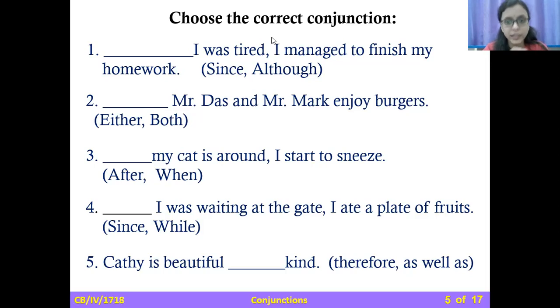Fourth. I was waiting at the gate. I ate a plate of fruits. So two actions. I told you now. Two actions are happening at the same time. So which word will you use? While. While I was waiting at the gate, I ate a plate of fruits. Very good.